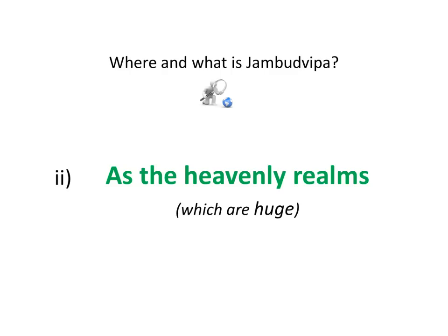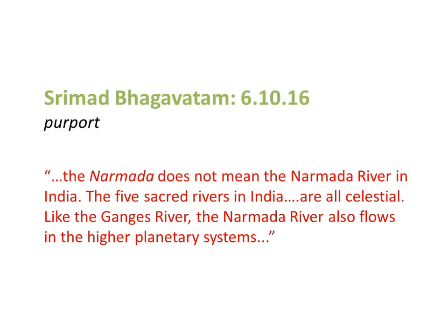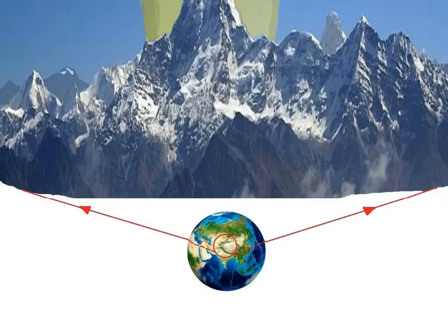The second model, the heavenly realms, which are huge. The sixth canto of the Bhagavatam describes, The Narmada does not mean the Narmada River in India. The five sacred rivers in India are all celestial. Like the Ganges River, the Narmada River also flows in the higher planetary systems. This is a useful quote. Looking at the sheer scale of the mountains of Jambodvip, as described in the Bhagavatam, we find they're absolutely huge. For example, the mountains just to the Earth's north are actually about eight times the height of the diameter of the Earth itself. So how do we understand that?